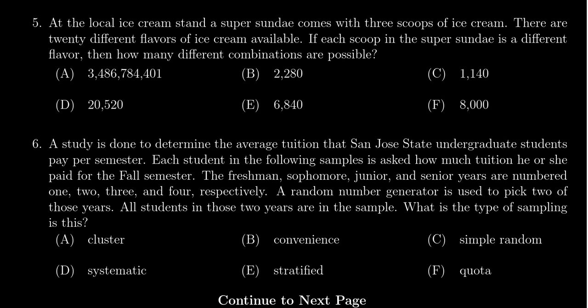At the local ice cream stand, a super sundae comes with three scoops of ice cream. Man, that sounds good. There are 20 different flavors of ice cream available. If each scoop in the super sundae is a different flavor, then how many different combinations are there?